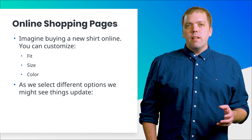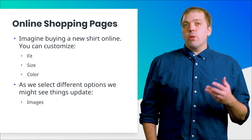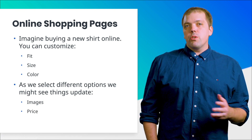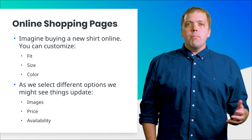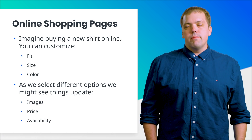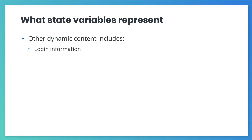For example, the picture might update to match the green shirt you selected. The price might change as you pick a different fit or size, and maybe an error message could appear if the options you selected are sold out. Other parts of an online shopping page also show dynamic content. When you log into your account, you might see your name displayed in the top right corner, or a shopping cart icon with a number badge indicating the number of products in your cart.